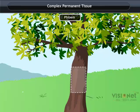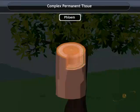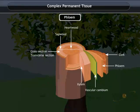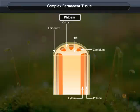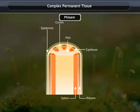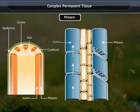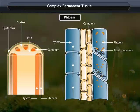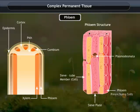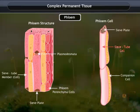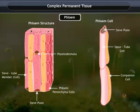Phloem is a tissue responsible for the transport of prepared food materials from the leaf to the place where it is used or stored. Phloem is made up of four types of elements: sieve tubes, companion cells, phloem fibers, and phloem parenchyma. Except phloem fibers, all phloem cells are living cells.